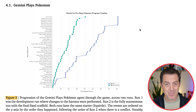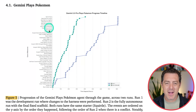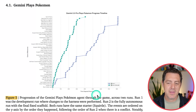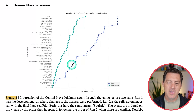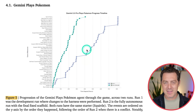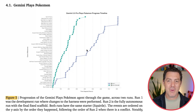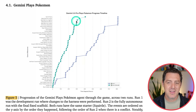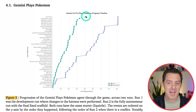Gemini played Pokémon and beat the game quite well. On the Y-axis are the game milestones — everything from just starting out to the Hall of Fame — and on the X-axis is time elapsed in hours. For run one, which are the blue circles, it took a little longer. After they learned what worked, they adjusted their scaffolding — all of the deterministic code wrapped around the large language model to make it more effective. The second run completed the game at just over 400 hours, half the time of the first pass.